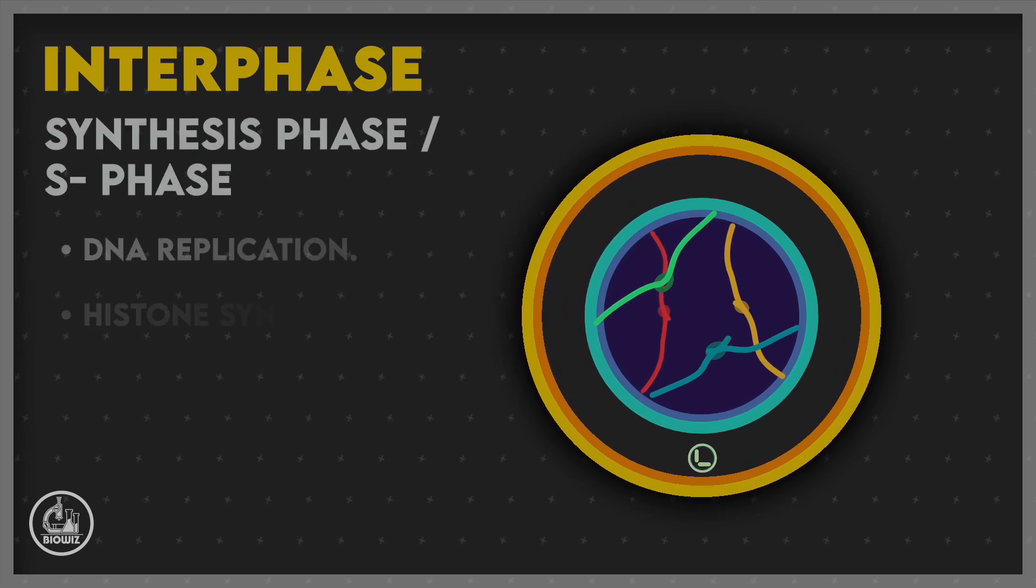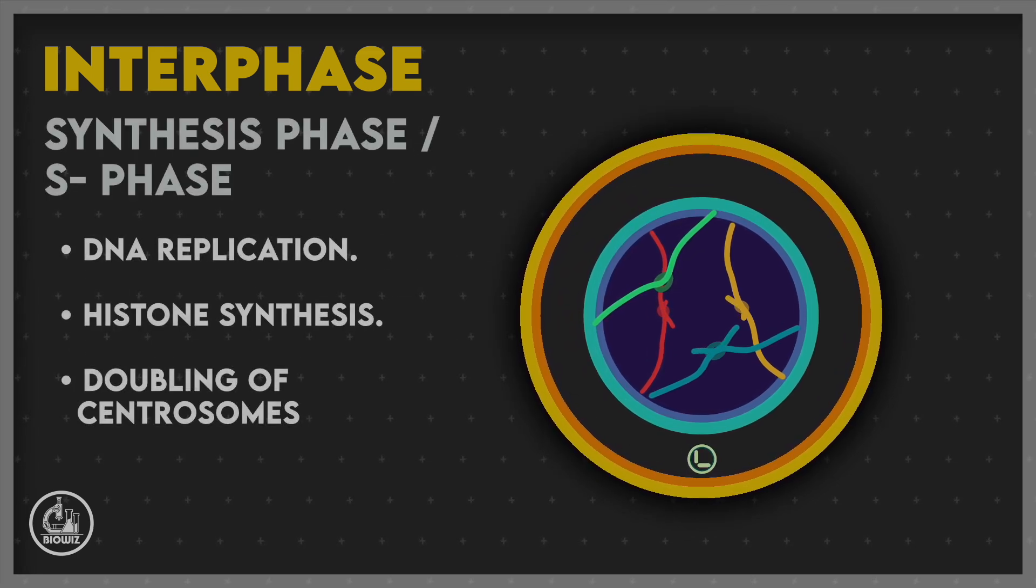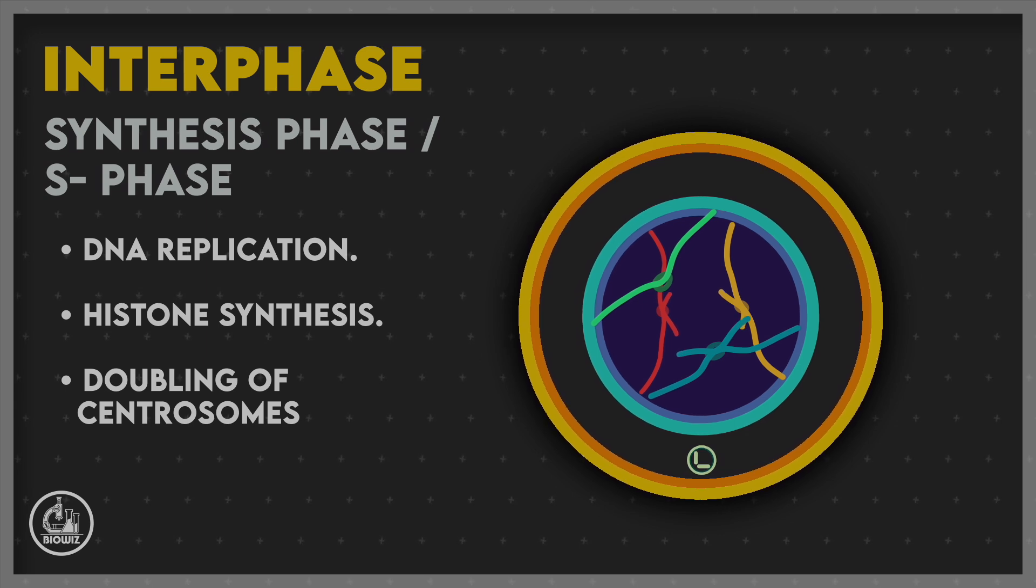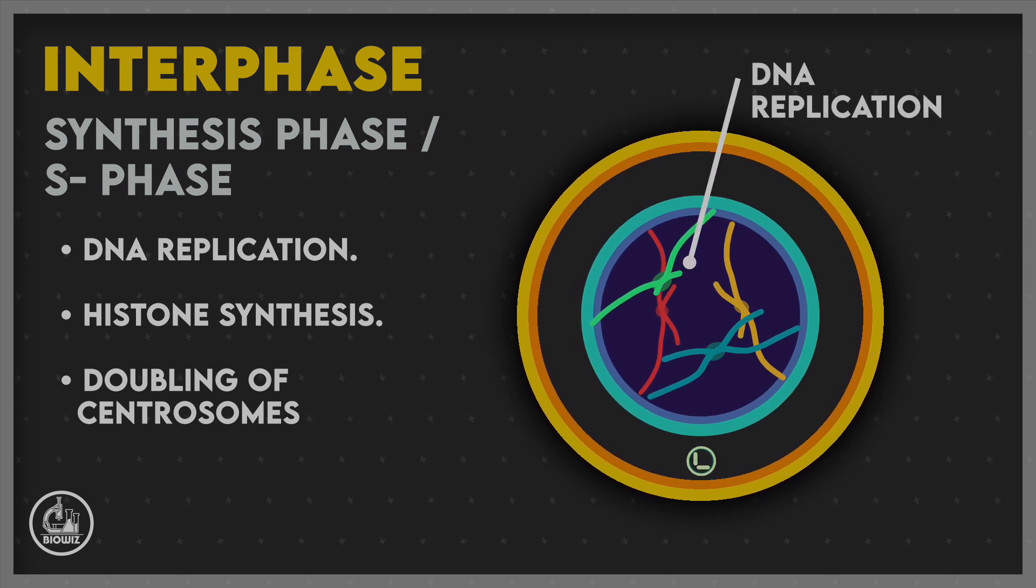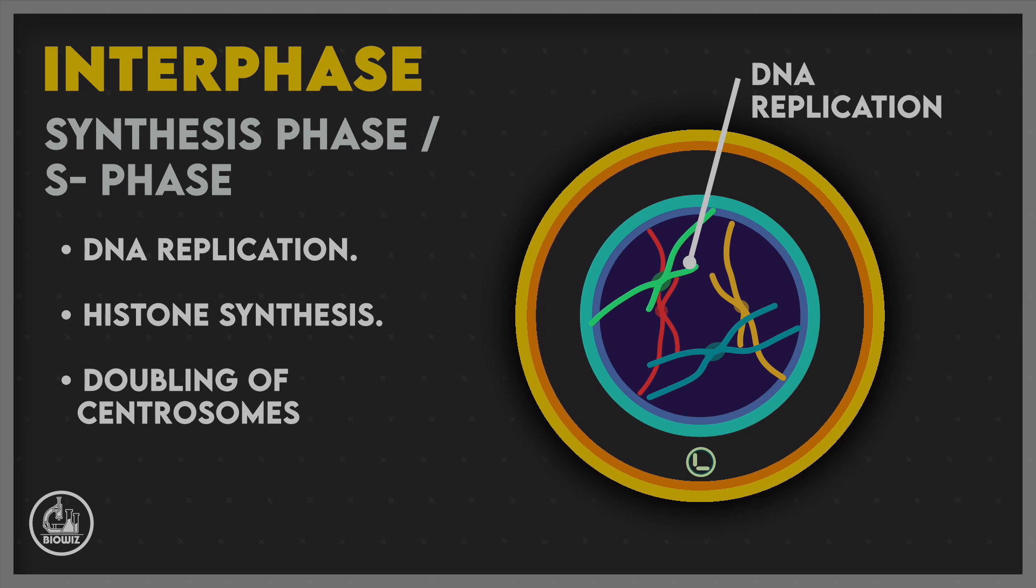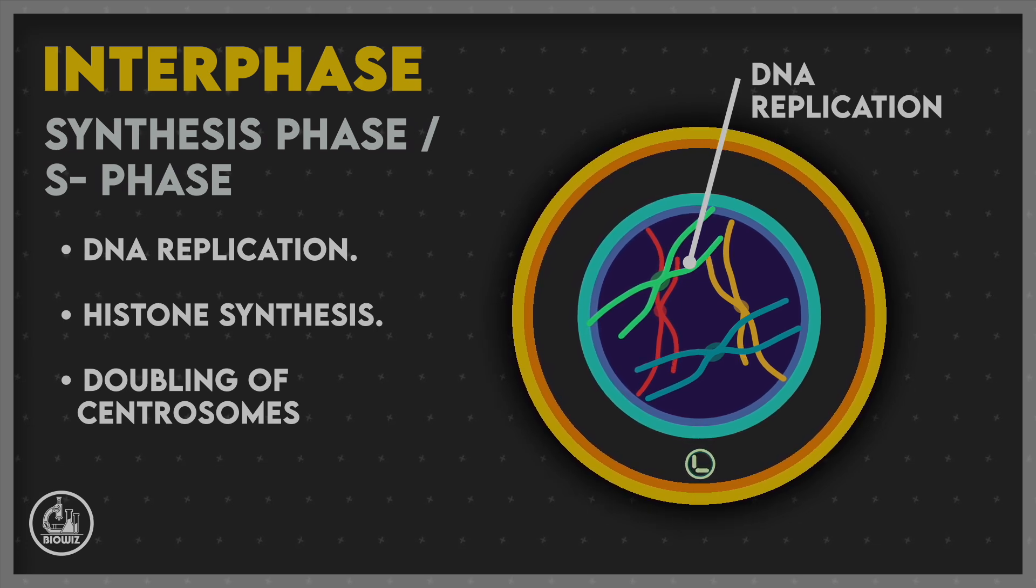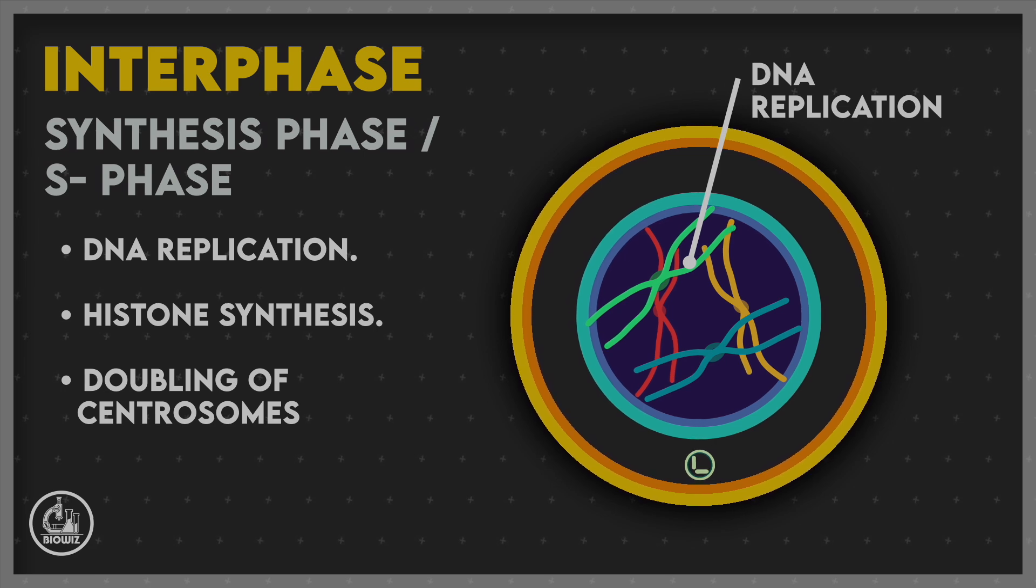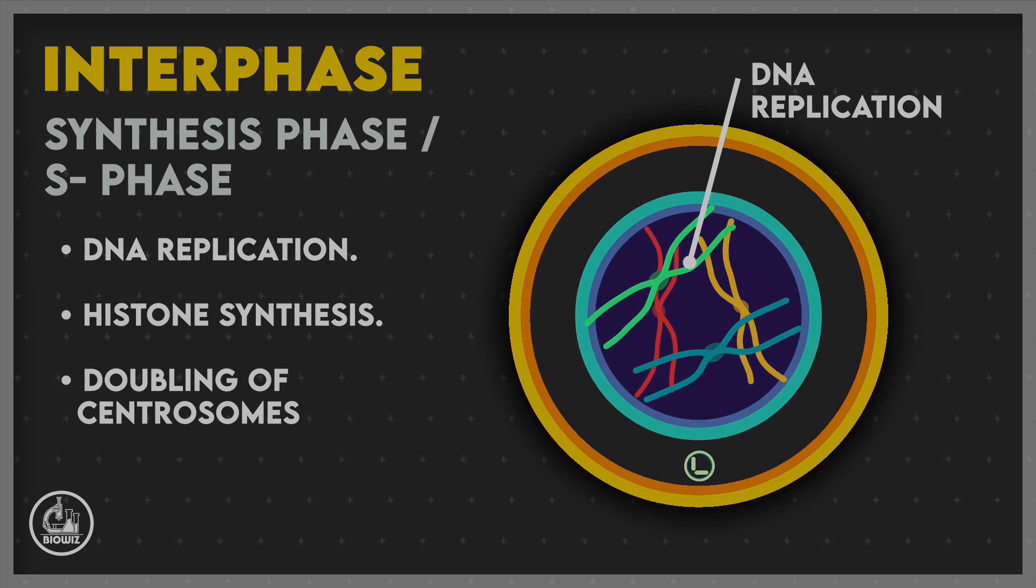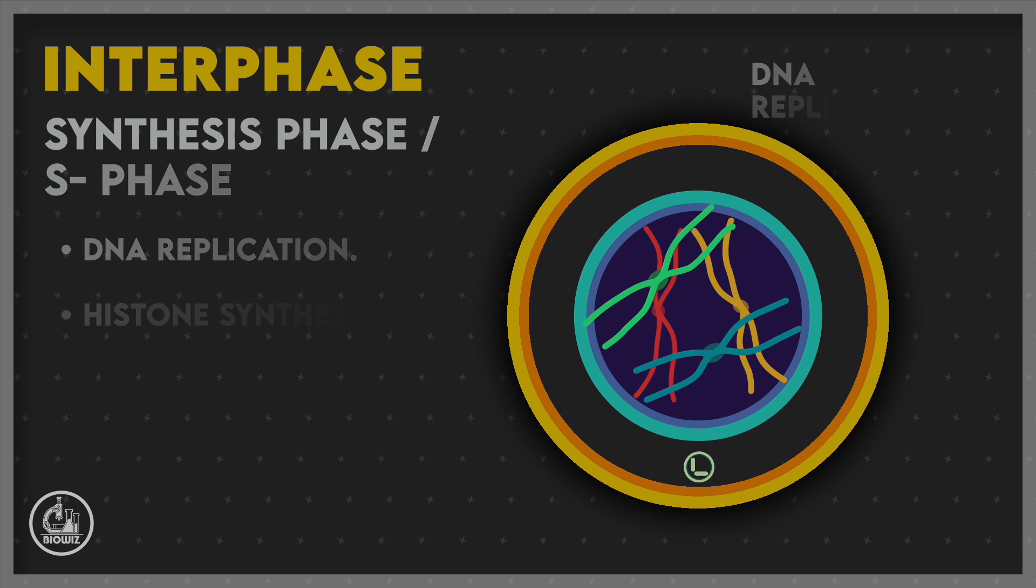The next phase is the S phase, in which the entire DNA content of the cell present in the nucleus is doubled by a process called DNA replication. The events occurring in the cytoplasm include doubling of centrosomes and synthesis of histone proteins for packing of newly formed DNA.